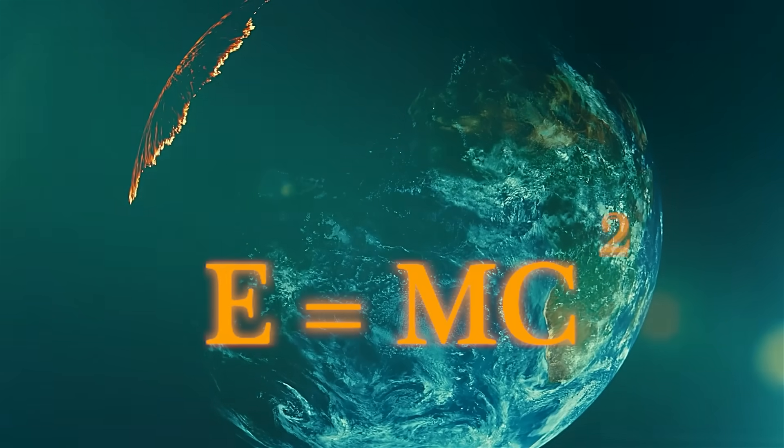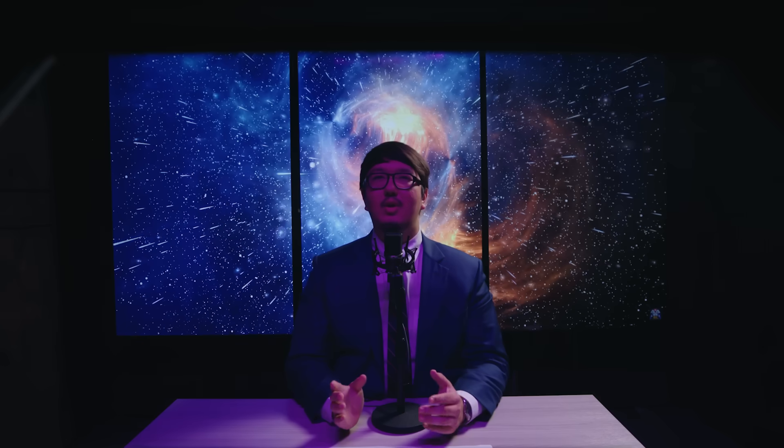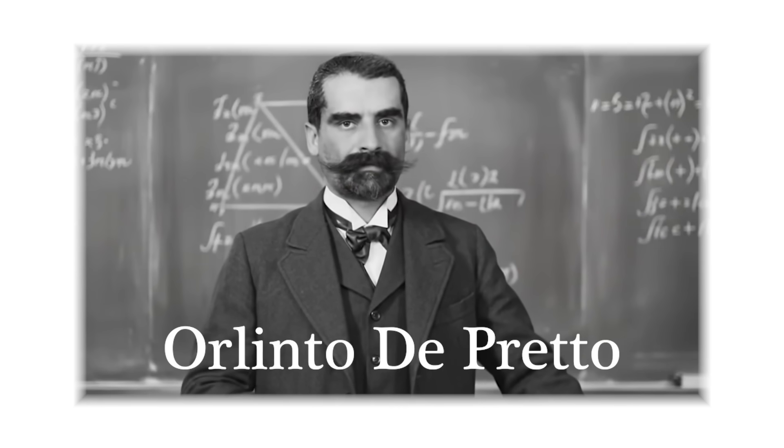Even the most iconic equation in physics, E equals mc squared, wasn't actually published by Einstein. Let that sink in. While he derived the concept of mass energy equivalence, the equation in that exact form was written by others, including Italian industrialist Olinto de Pretto in 1903, who proposed it in a scientific journal two years before Einstein's 1905 paper. Lorentz also approached the idea through his work on electromagnetic mass, and yet Einstein's name became synonymous with the equation. The mythology had begun.